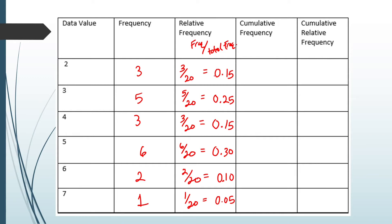Why does the total for the relative frequency have to add up to 1? Because the total should be equivalent to 100%, or 1.